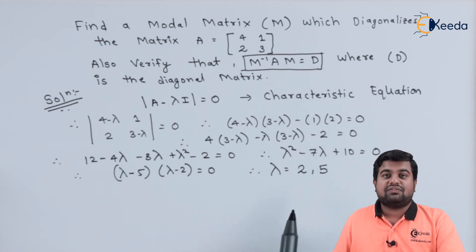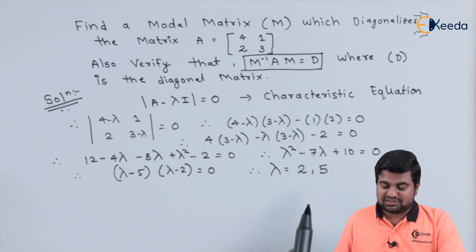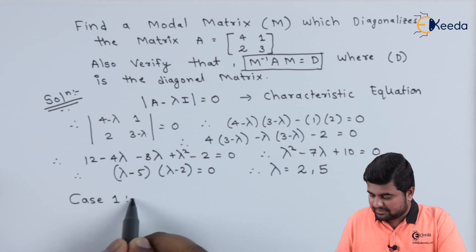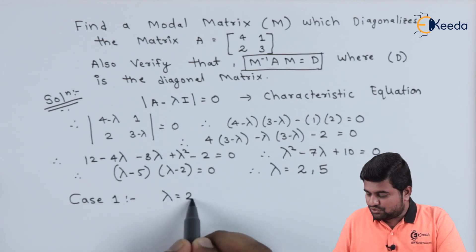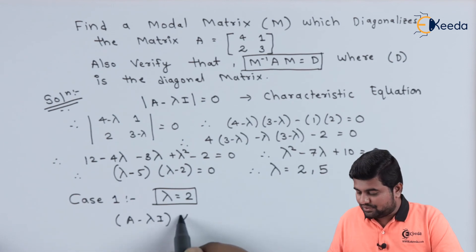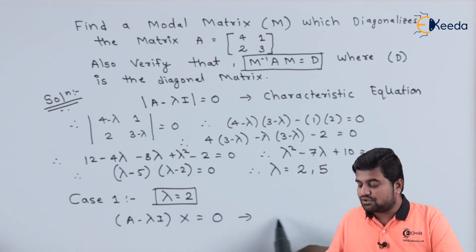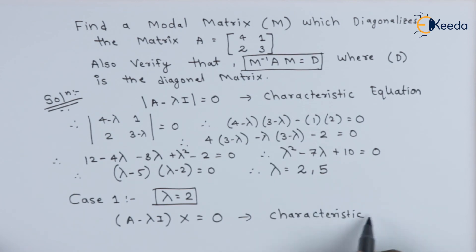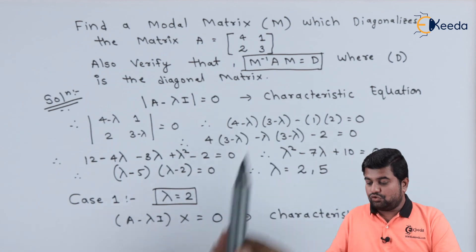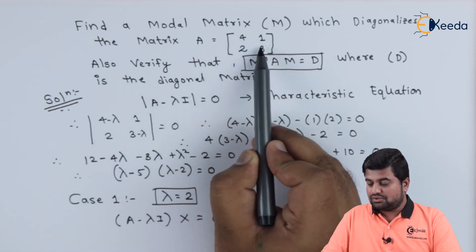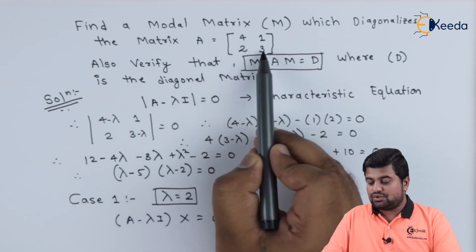Now let us find the eigenvectors. Case 1: lambda equals 2. Using the equation (A minus lambda I) times x equals zero, we subtract 2 from all diagonal elements: 4 minus 2 gives 2, resulting in the matrix [[2, 1], [2, 1]] into x equals zero.